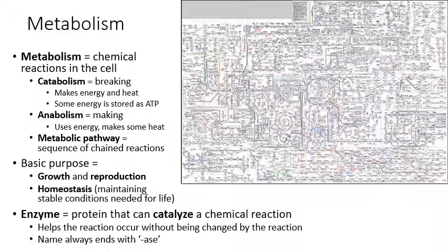The basic purpose of metabolism is twofold. First, you have the need for growing and reproducing — metabolism is used to build molecules for the cell that let it grow and divide. Second, the other purpose of metabolism is to maintain homeostasis, which is stable internal conditions within the cell so it can keep living. For instance, you need to maintain your body temperature within a set range, maintain your blood pH at a normal level — both are types of homeostasis.